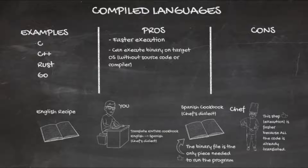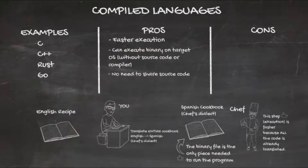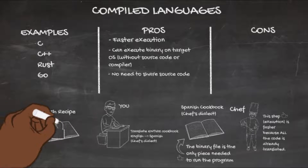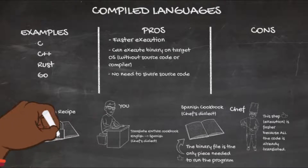When a program is compiled, it has to be compiled for a specific operating system and architecture — a specific version. It's not enough to specify Windows, Linux, or Mac; it has to be, for example, Windows 64-bit Intel processor. Once you compile it for a certain OS, you can send that file to anyone with that OS and they should be able to run it with no other components needed. Also, when distributing a compiled program, you don't have to distribute your source code.